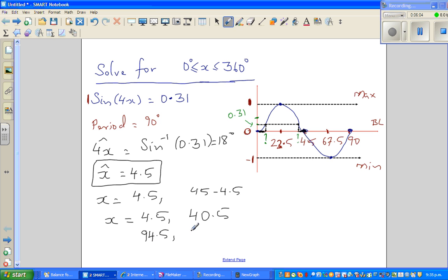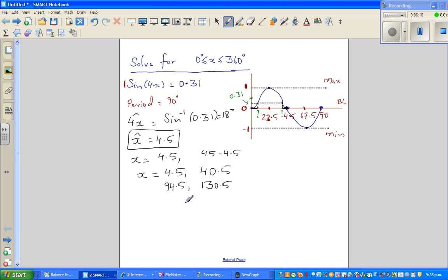So next, let me extend this. If you add 90, this is 184.5, and plus 90 is 220.5. So we've got 1, 2, 3, 4, 5, 6, so you've got 2 more, because this is 4x.